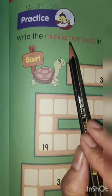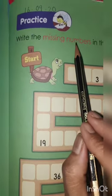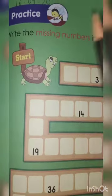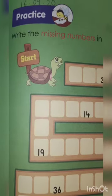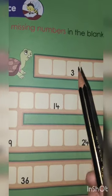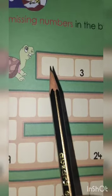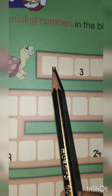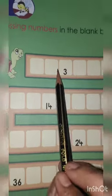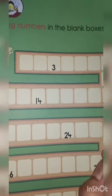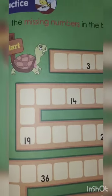Write the missing numbers in the blank boxes. We have already learned about missing numbers in our previous class. So what you have to do. First you have to find out missing number and then write down in the blank boxes. Empty boxes.